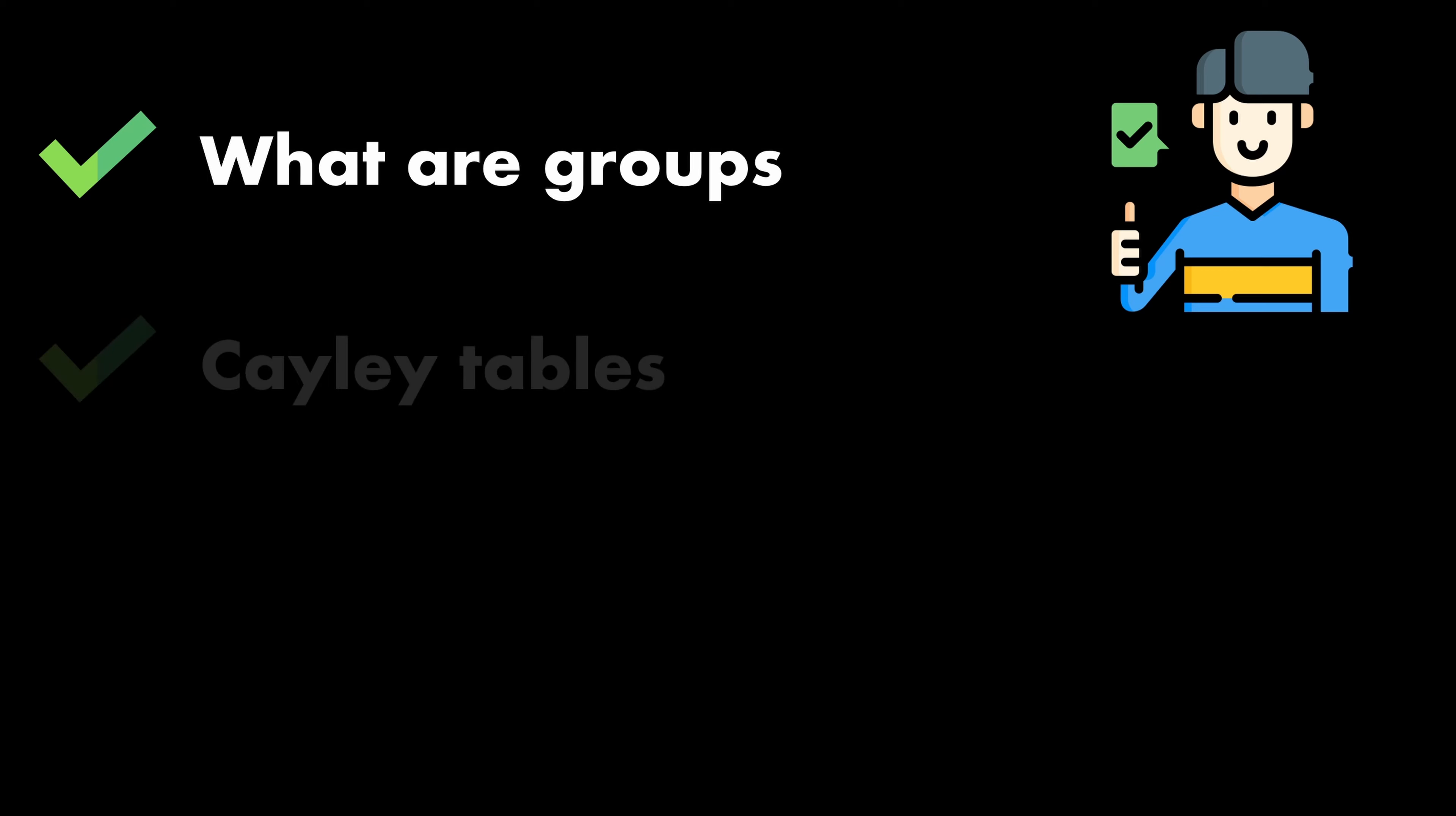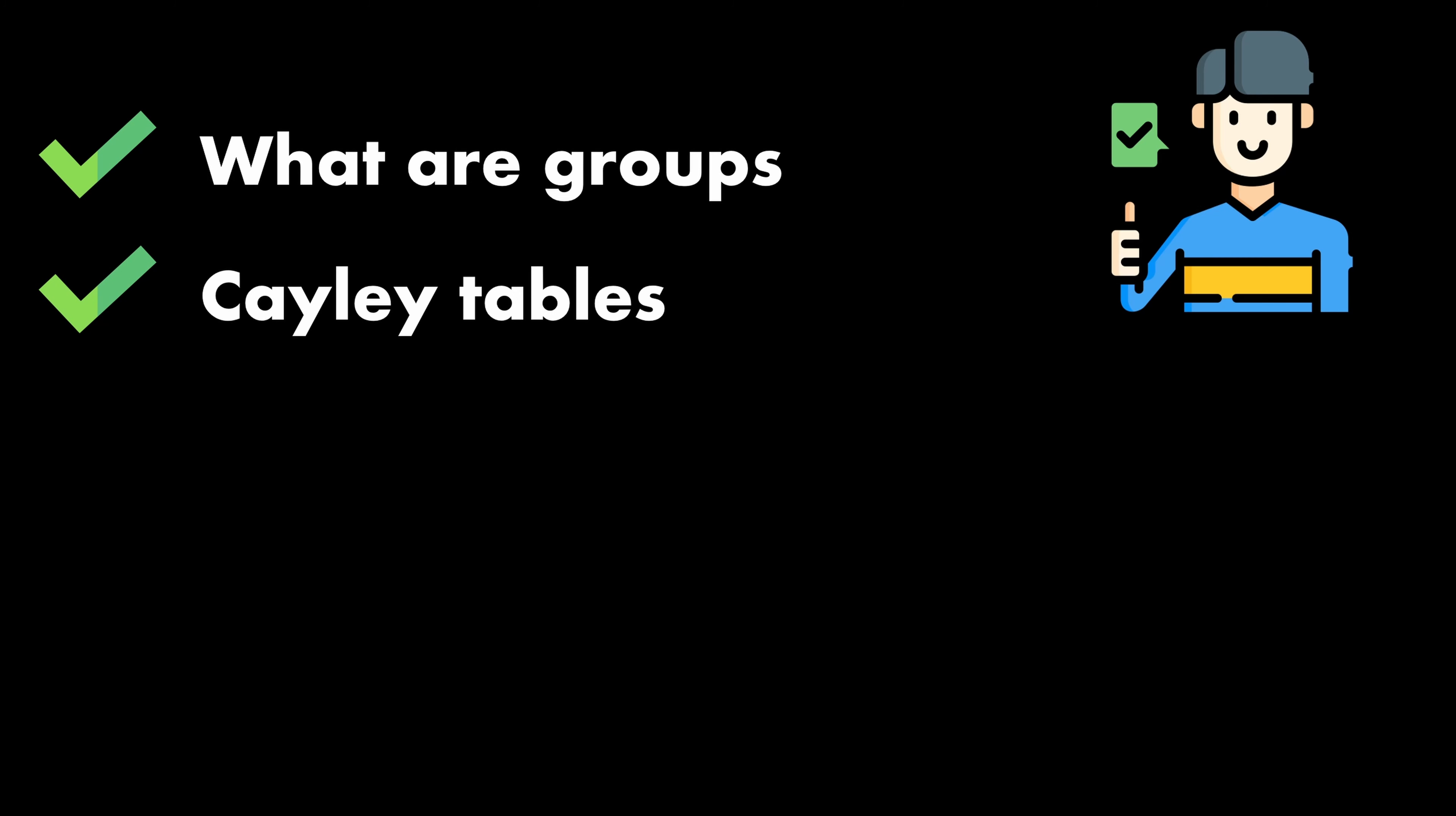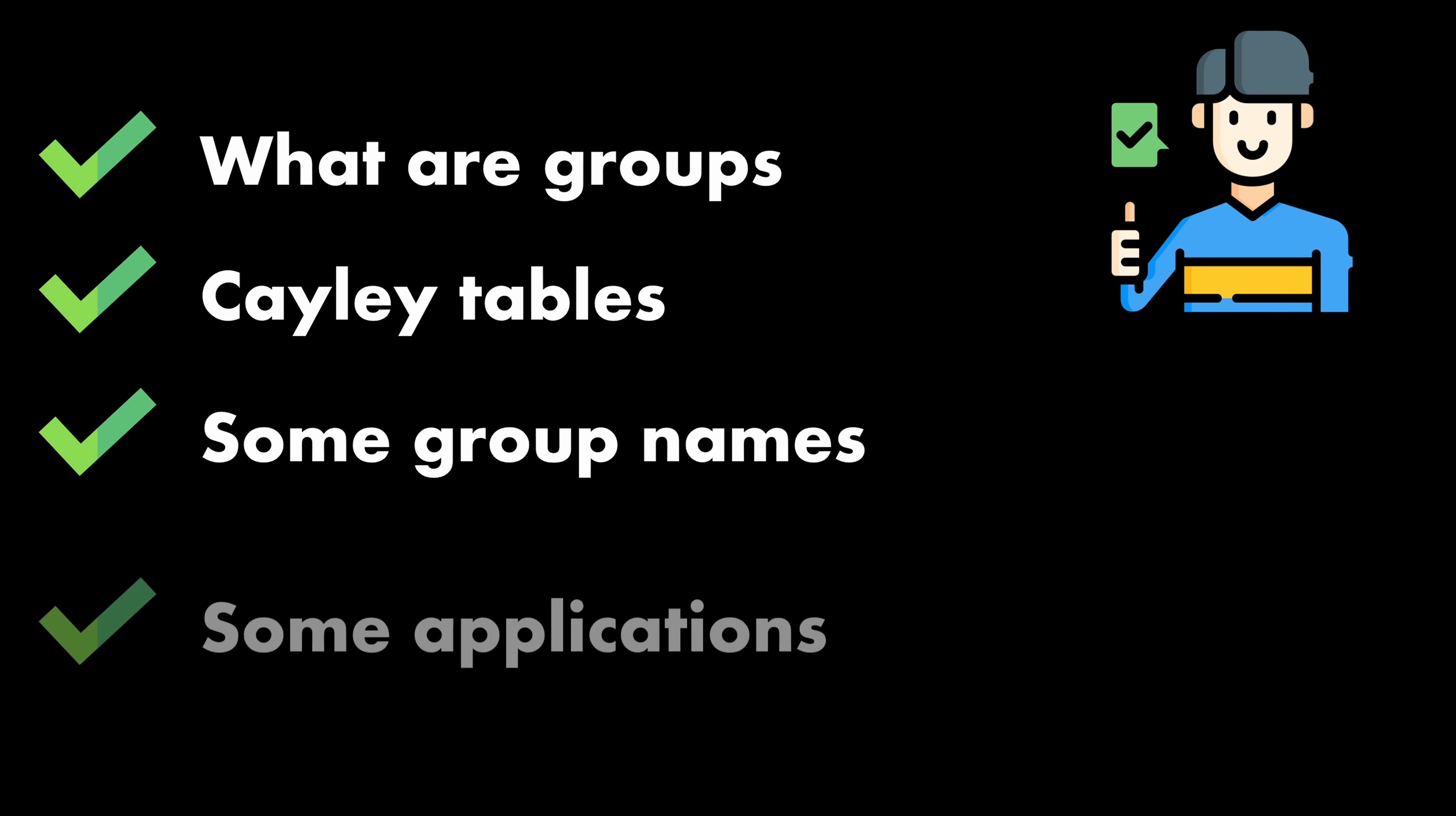That's it for this introduction part. At this point, you should be familiar with what groups are, what Cayley tables can be used for, plus some of the group names and finally, applications of equivariant neural networks. Thanks for watching and I'll see you again in the next part.